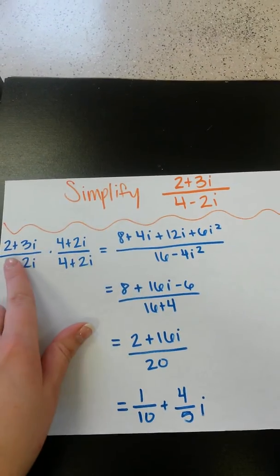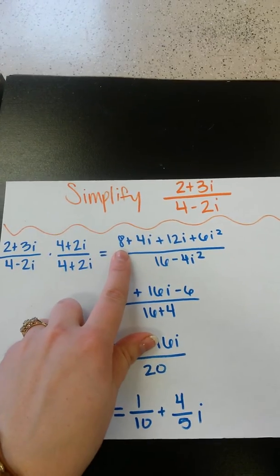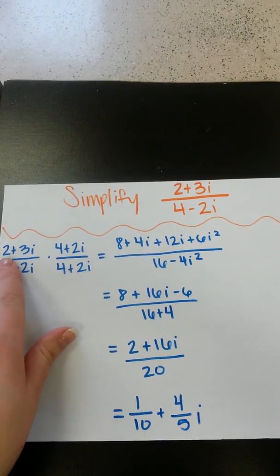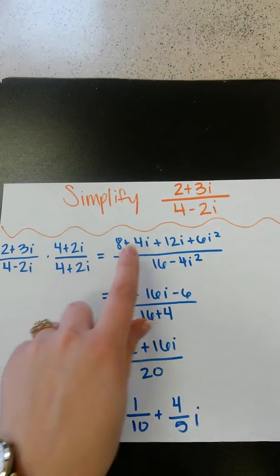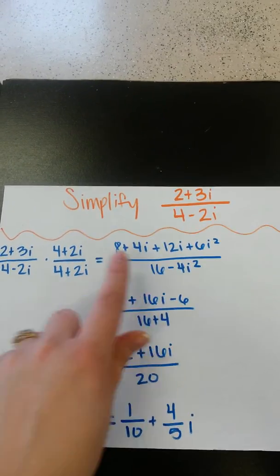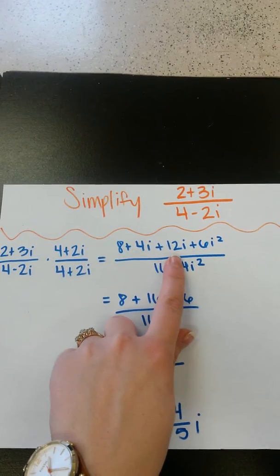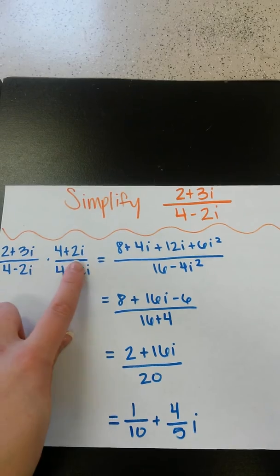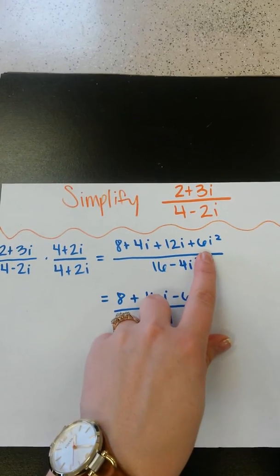So then, we're just going to do foiling. So 2 times 4 is 8. And then 2 times 2i is 4i. 3i times 4 is 12i. And 3i times 2i is 6i squared.